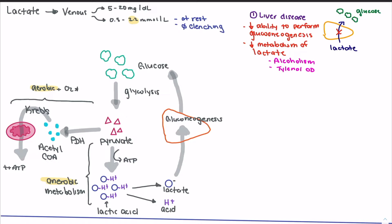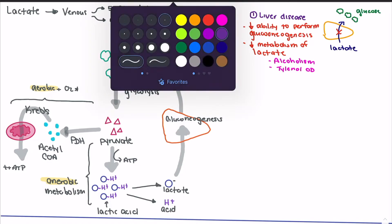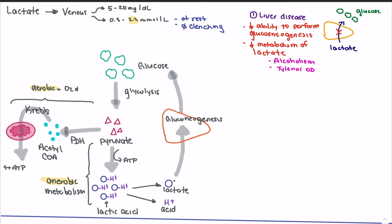So liver disease is something to think about — if a patient has liver disease, we may expect a higher than normal lactate level, and that's where trends are important to see if things are progressing. Another cause that can lead to increased lactate is anything that increases glycolysis. If something accelerates glycolysis, we start seeing that increase.